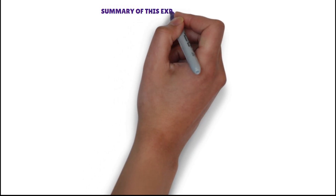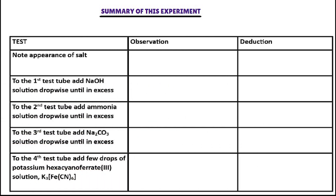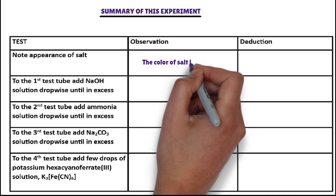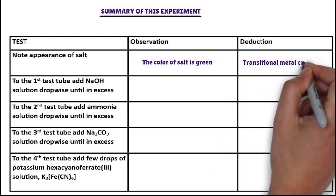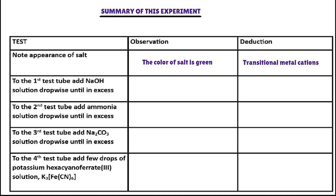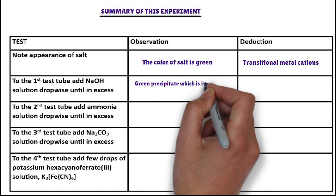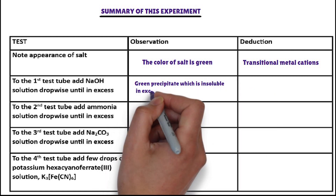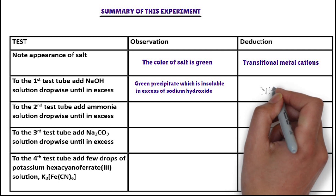Summary of this experiment. Observation: the color of the salt is green. The green color indicates that the cation present is a transition metal cation — for example, nickel(II), copper(II), iron(II), or chromium(III). These four cations can form green salts. In the first test tube, sodium hydroxide is added dropwise. The cations that form a green precipitate insoluble in excess sodium hydroxide are nickel(II) ion and iron(II) ion.